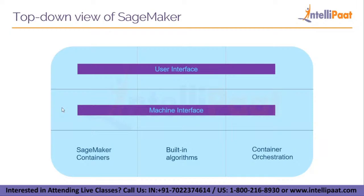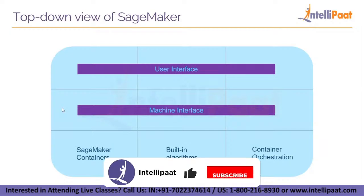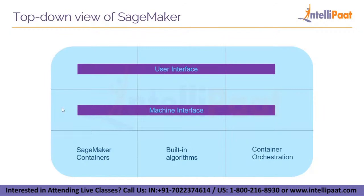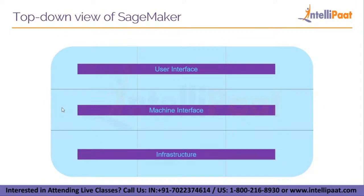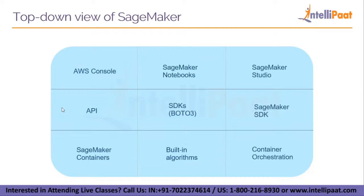Lastly, we also get container orchestration here. You might think that tools like Kubernetes already handle this, or wonder why not code it yourself. But the idea is to have everything in one place — the SageMaker service — so that it is easy to manage. This covers the different layers in SageMaker and all the components within those three layers.